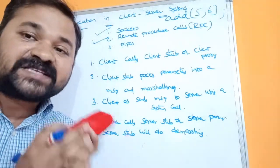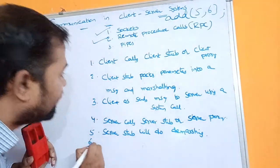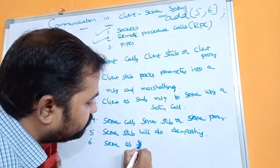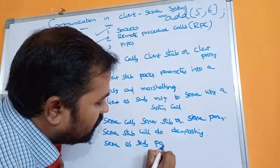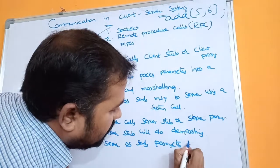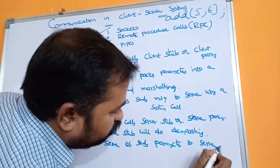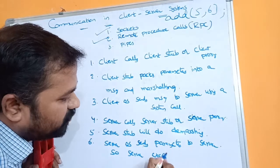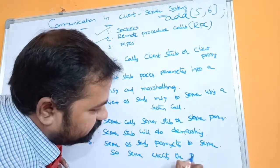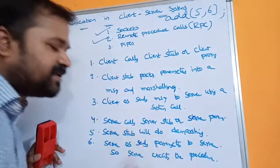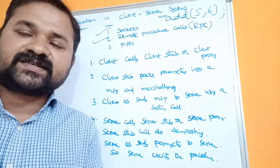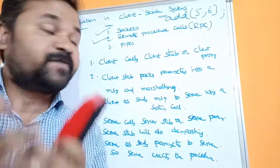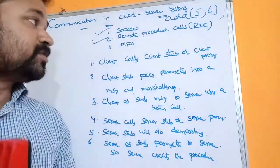The server then executes the procedure. Once that procedure execution is over, it returns the result, and that result is returned to the client machine. These are the six steps performed while implementing remote procedure call.